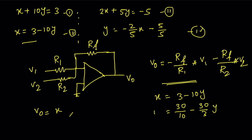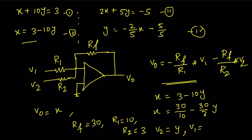We can write 3 as 30/10 and 10y as 30/3 · y. Comparing with the adder formula, Rf = 30, R1 = 10, and R2 = 3. Here V2 = y and V1 = -1. Why minus 1? Because there is a plus sign in the equation — so if V1 is -1, then minus times minus gives plus. So we already got the information from equation 3.